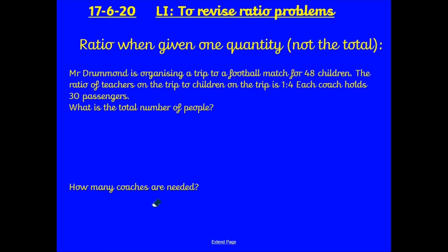Now then, here's another question like that. Mr Drummond has organised a trip for a football match for 48 children. The ratio of teachers on the trip to children on the trip is 1 to 4. So, for every 1 teacher, there are 4 children. Each coach holds 30 passengers. What is the total number of people? So, first of all, I need to find out the total number of people. So, the ratio is 1 to 4. I don't know my total, so I can't use that to help me. But I do know, children and adults, or teachers, that there are 48 children. So, I can use that to find out how many adults there will be. So, if there are 4 parts is equal to 48, I need to find 1 part.